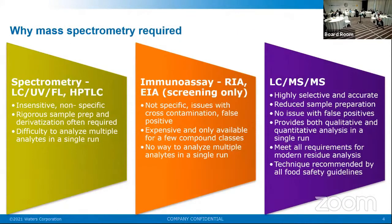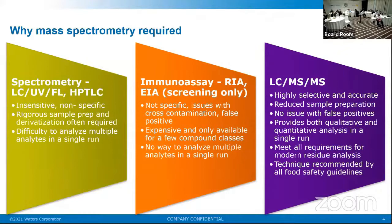Why is mass spectrometry really required for multi-residue analysis? This is a very important topic. Twenty to thirty years back, there was not much mass spec used in food safety analysis. If you go back, you had liquid chromatography with UV or fluorescence detection — fluorescence is still used today for some analysis. When you say multi-residue analysis, we definitely need to look at mass spec, because we cannot achieve great separation with absorbance-based detectors. Immunoassays can be done, but you cannot get the specificity, which is very important for pesticide analysis with multi-analytes.